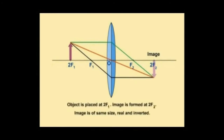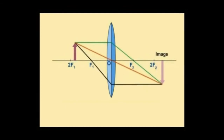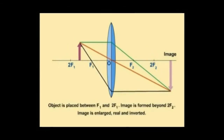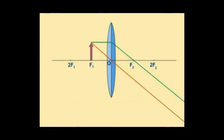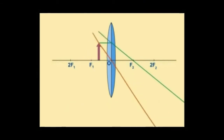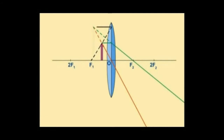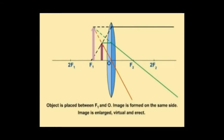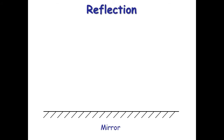Moving the object closer to the lens changes the image. At 2F, the image forms at 2F on the other side — same size as the object, magnification of one. Moving closer still makes the image bigger than the object — magnified. Magnification equals image height divided by object height. At F, the rays are parallel and won't meet — the image is at infinity. Move even closer and you must draw virtual rays backwards, giving a virtual image that is magnified and upright, on the same side as the object.